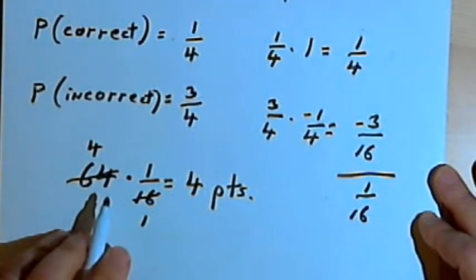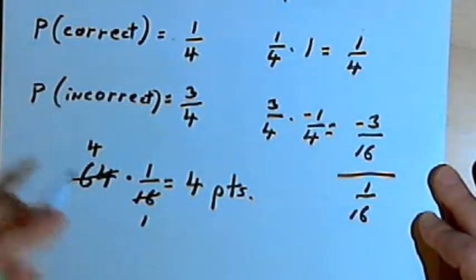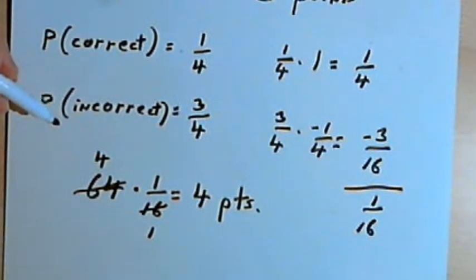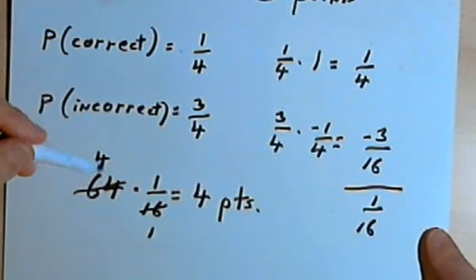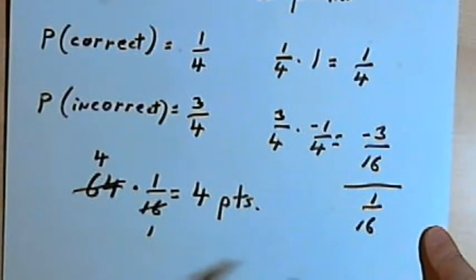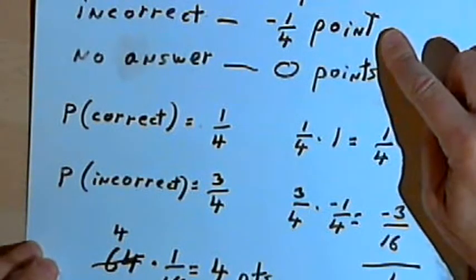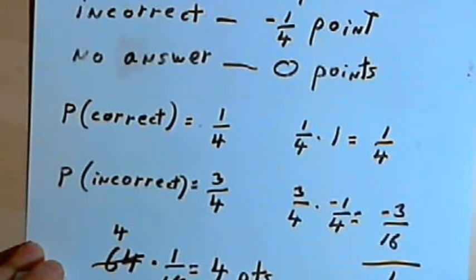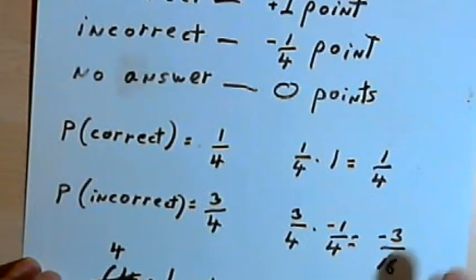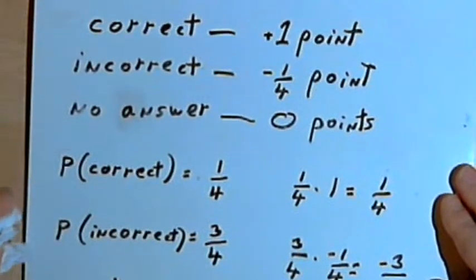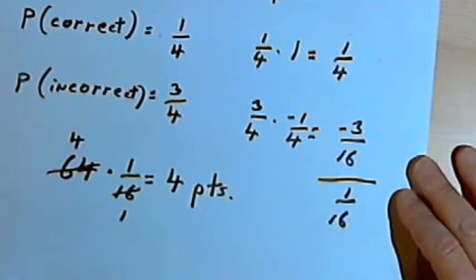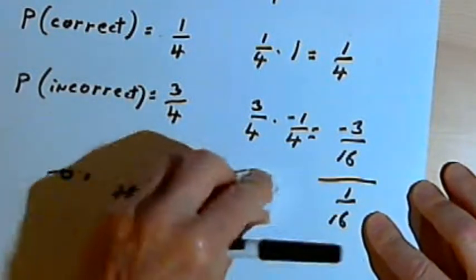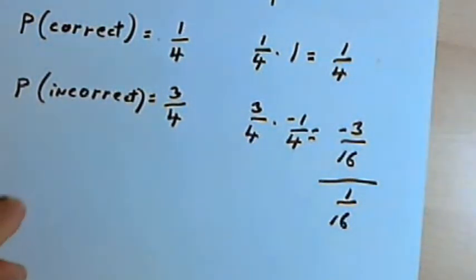Now, this is probability — there's no guarantee it will work out exactly this way. The more questions you're guessing at, the better the chances are that this expected value holds. But there's always a chance you get them all wrong, losing sixteen points, or get them all right, gaining sixty-four points. All that expected value says is that on average, you're going to get a sixteenth of a point for each question.